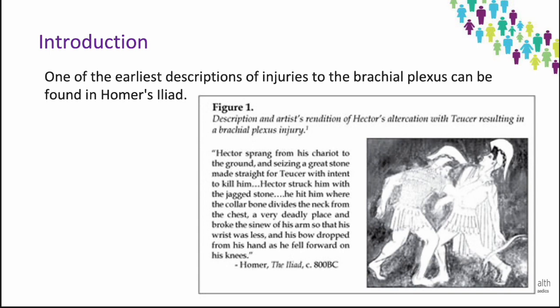The earliest written description of a brachial plexus injury is attributed to Homer about 800 BC in his depiction of the battle during which Hector struck Tusa over the clavicle with a rock that makes him incapable of wielding his bow in the Iliad. As you can see in the photo, it says Hector struck him where the collarbone divides the neck from the chest — a very deadly place — and broke the sinew of his arm so that his wrist was limp and his bow dropped from his hand as he fell forward on his knees.